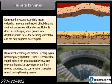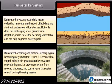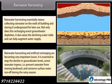Rainwater harvesting and artificial recharging are becoming very important issues. It is essential to stop the decline in groundwater levels, arrest seawater ingress — that is, prevent seawater from moving landward — and conserve surface water runoff during the rainy season.